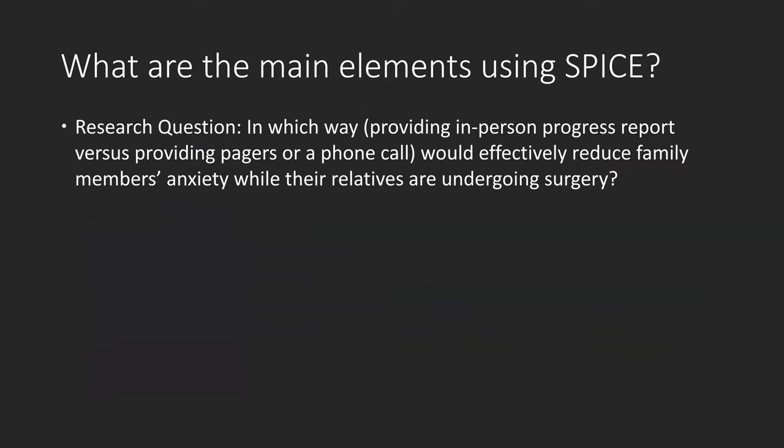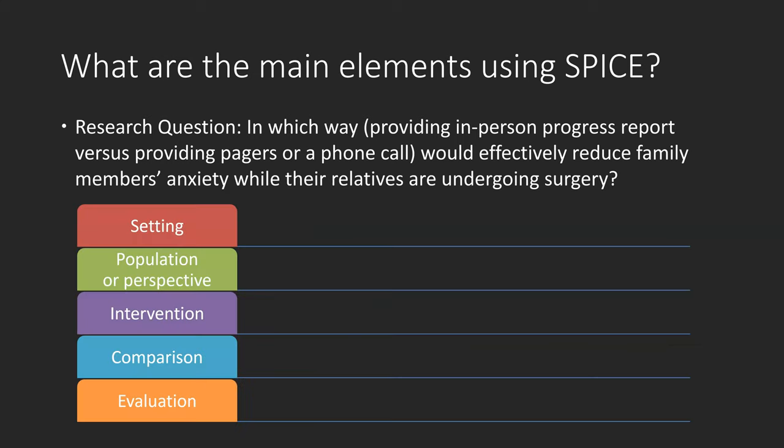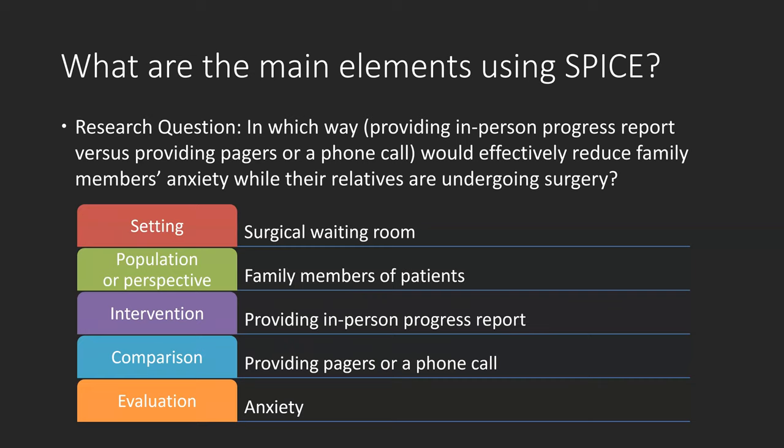Here is an example: in which way would providing in-person progress reports versus providing pagers or a phone call effectively reduce family members' anxiety while their relatives are undergoing surgery? The five elements are: setting is surgical waiting room; population is family members of patients; intervention is providing in-person progress reports; comparison is providing pagers or a phone call; evaluation is anxiety.